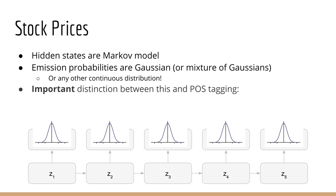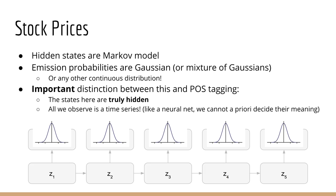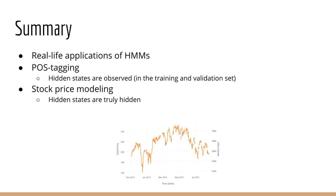One important distinction between this example and the parts of speech example is that we know what the parts of speech are. In this example, the hidden states are truly hidden. You can sort of draw an analogy between the hidden states here and the inner nodes of a neural network — in both cases, they are not guaranteed to have any meaning. To summarize this lecture, we looked at real life examples of HMM applications: one for discrete observations and one for continuous observations — parts of speech tagging and stock price analysis respectively. We noted that while hidden states can be observed, they don't have to be, and that's what makes HMMs so powerful: they can model hidden causes that we don't even know exist or can't feasibly enumerate.